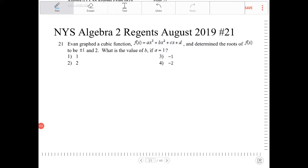Even graphed a cubic function f of x equals ax cubed plus bx squared plus cx plus d and determined the roots of f of x to be plus or minus 1 and 2. What is the value of b if a equals 1?